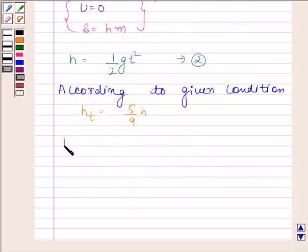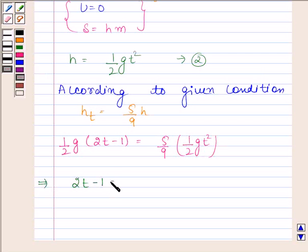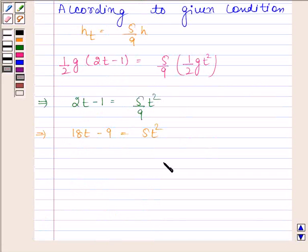Now h_t is equal to 1 by 2g into 2t minus 1 and h is 1 by 2gt squared. This implies 2t minus 1 is equal to 5 by 9t squared. This implies 18t minus 9 is equal to 5t squared.